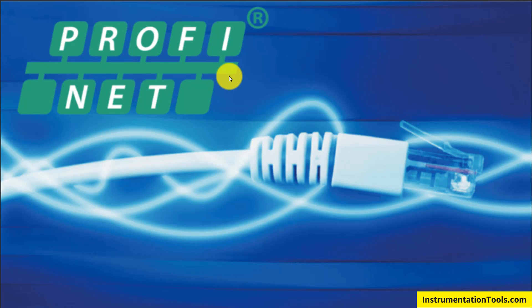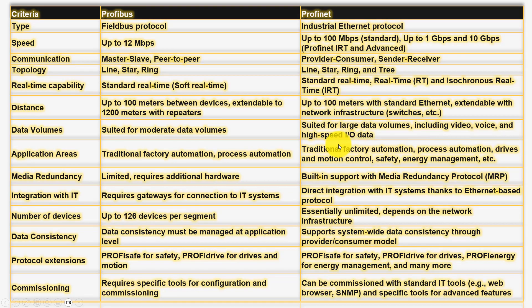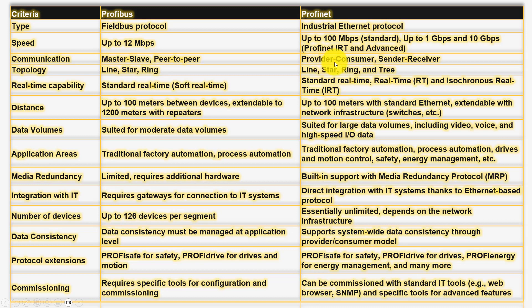Looking at the differences: in communication technology, Profibus is a serial field bus protocol, while Profinet is an industrial Ethernet protocol utilizing standard Ethernet infrastructure. For speed, Profinet offers higher bandwidth — achieving 100 Mbps to 1 Gbps and up to 10 Gbps — compared to Profibus, which typically operates at up to 12 Mbps for Profibus DP and only 31.25 Kbps for Profibus PA. For network communication, Profibus uses master-slave peer-to-peer communication, while Profinet supports provider-consumer and sender-receiver models.